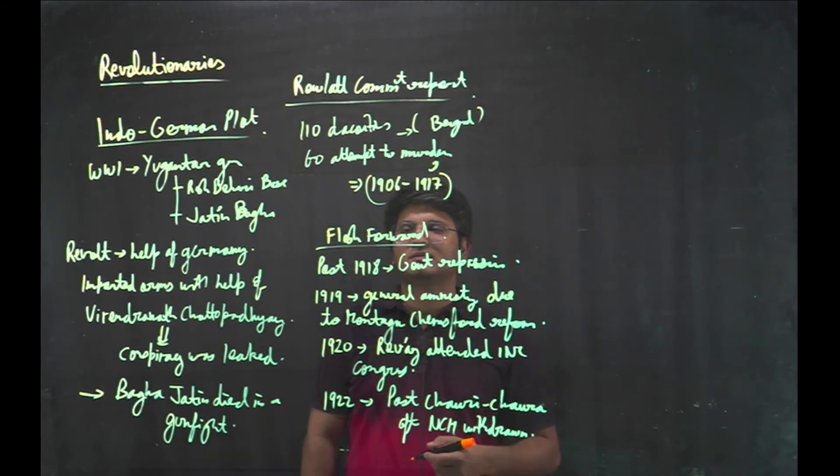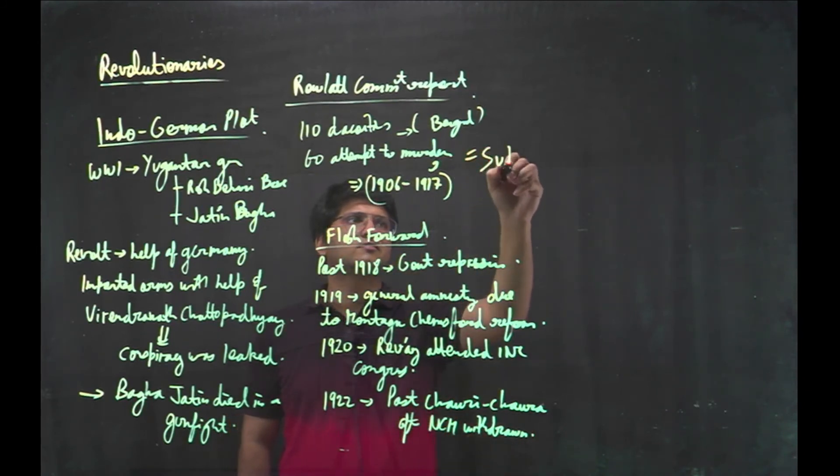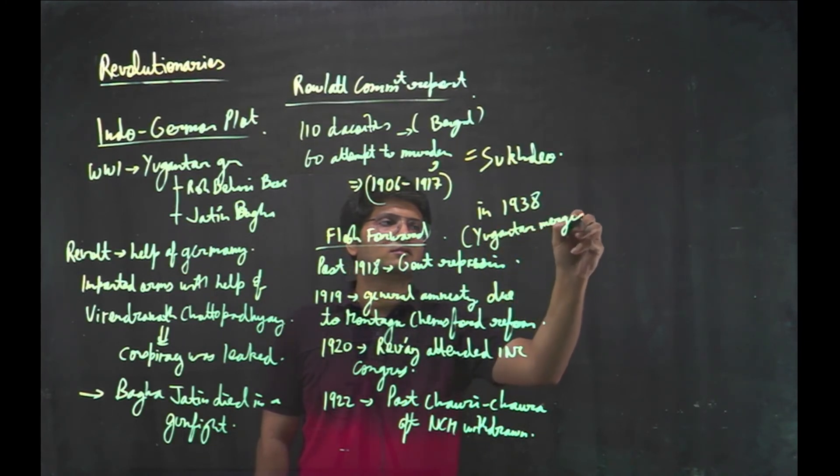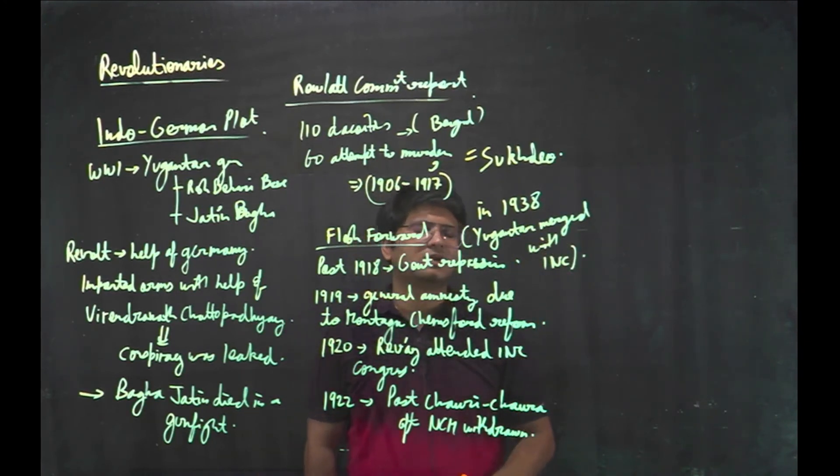Therefore, old institutions were revived by them and new ones also by Sukhdev. And later on, Yuganthar also became active. And in nineteen, Yuganthar merged with Indian National Congress. And later on, Sachin Sanyal also founded the HRA.